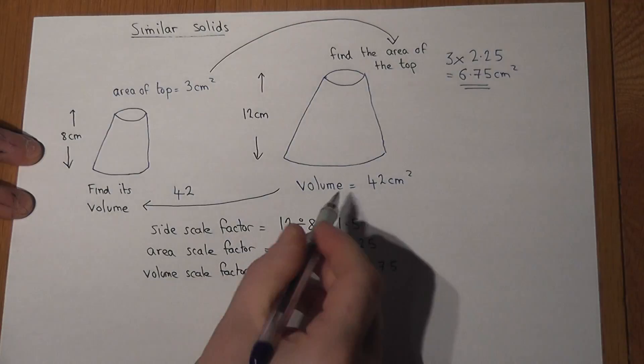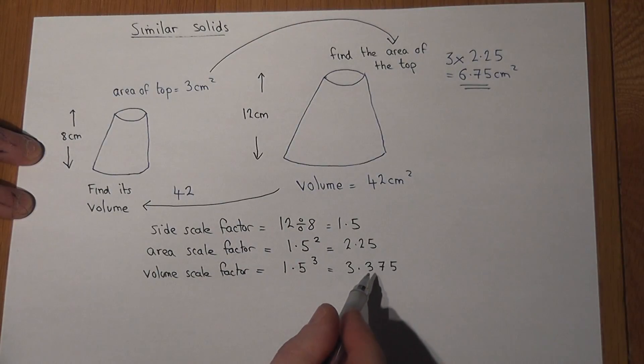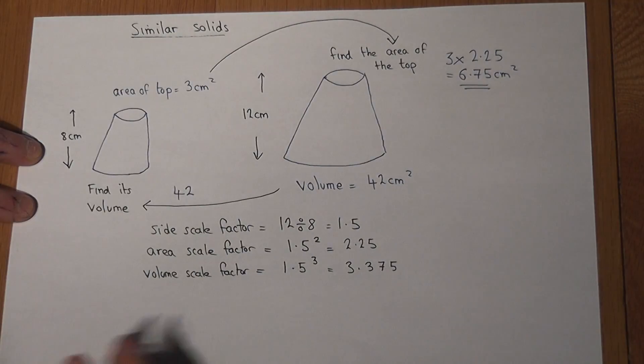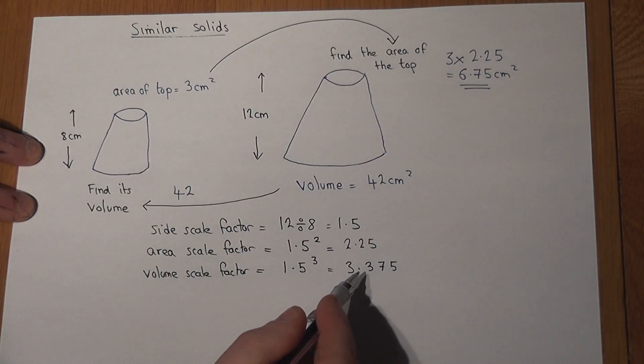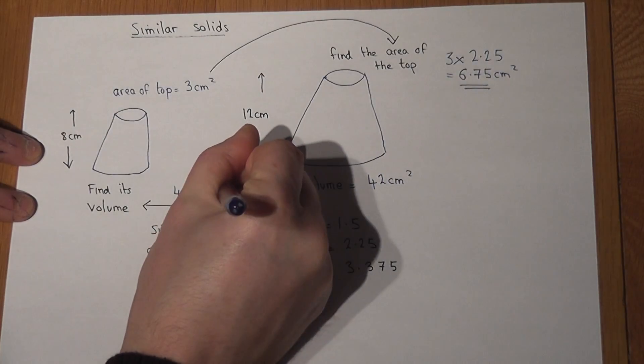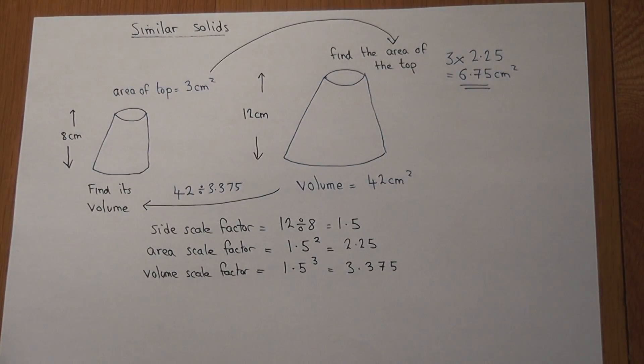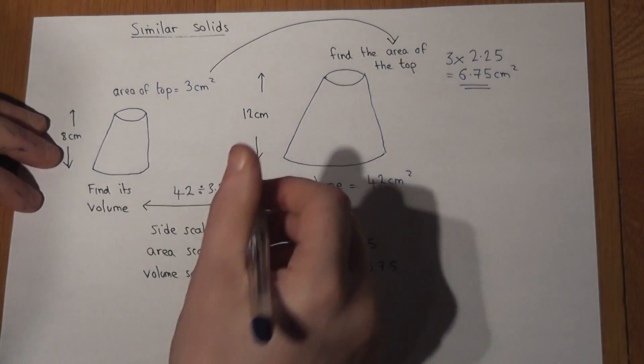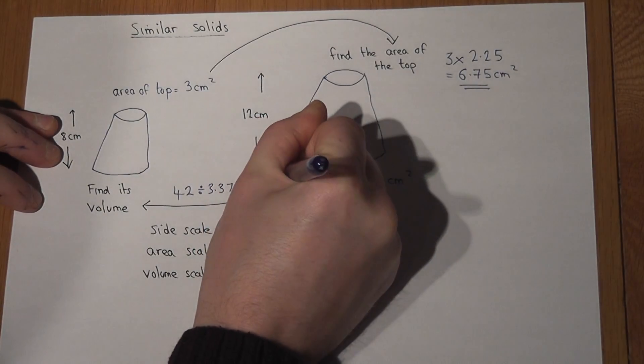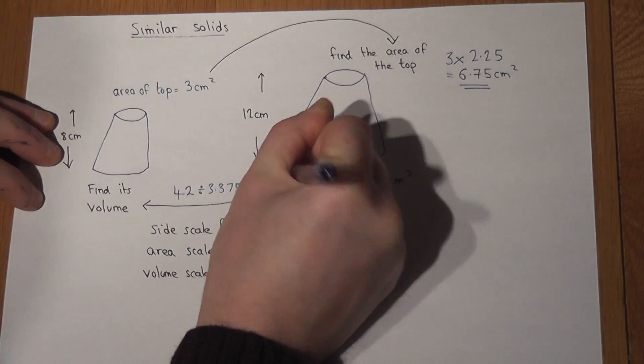I knew the volume was 42. The volume scale factor is 3.375, but it's not getting bigger, it's getting smaller. So rather than times by 3.375, I divide by 3.375. So 42 divided by 3.375 is 12.4 centimeters cubed.